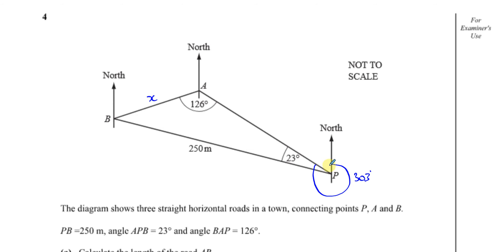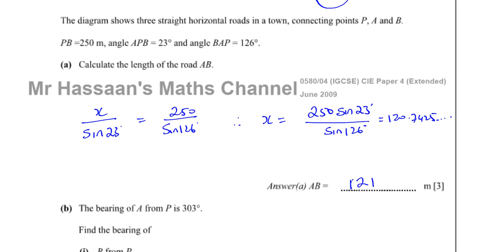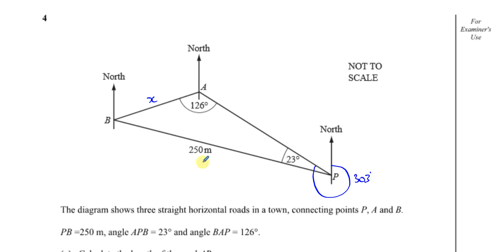The bearing of A from P is 303 degrees. Then it asks: find the bearing of B from P. We're going to do the same thing, start from the same place, but we're going to go to B.